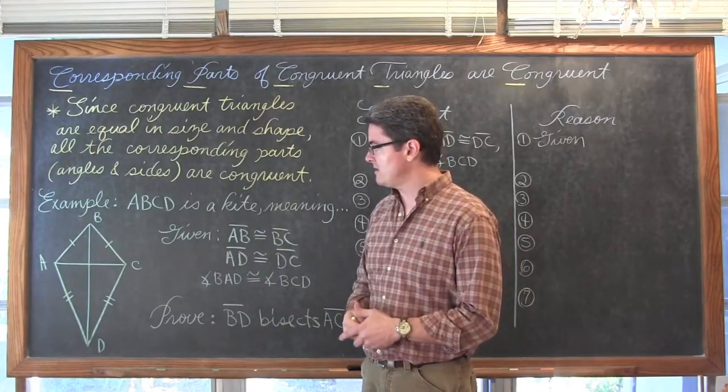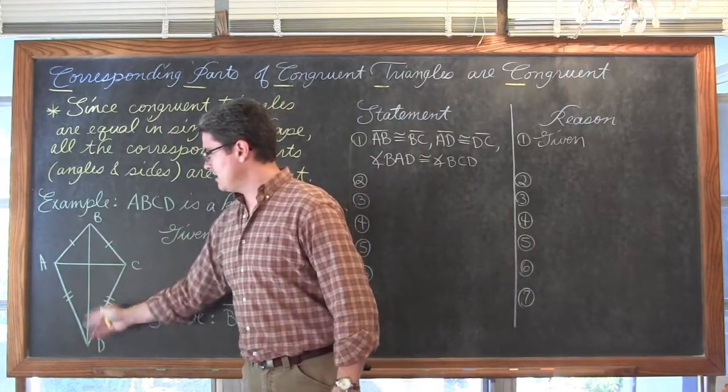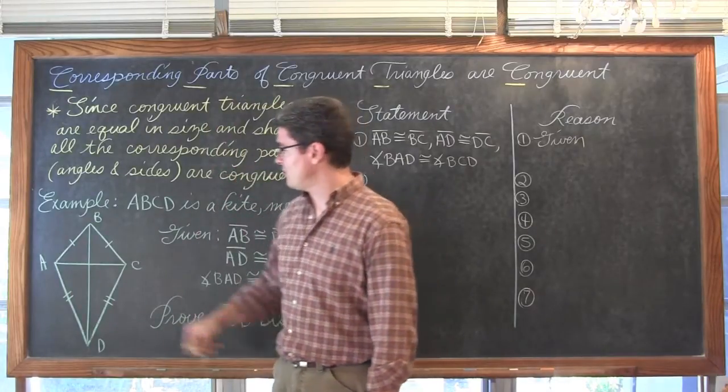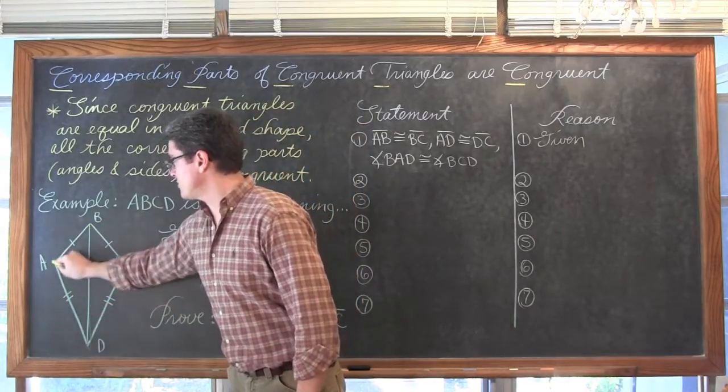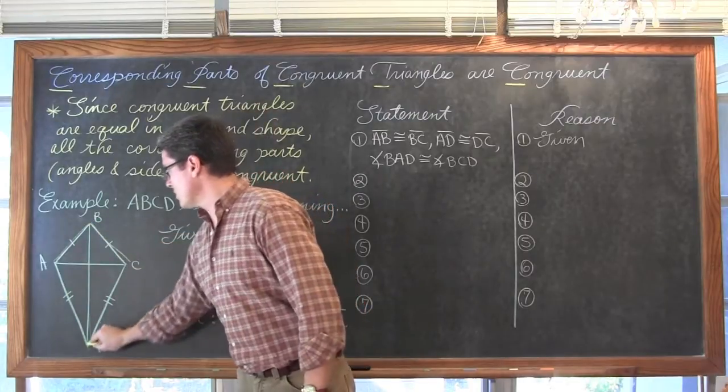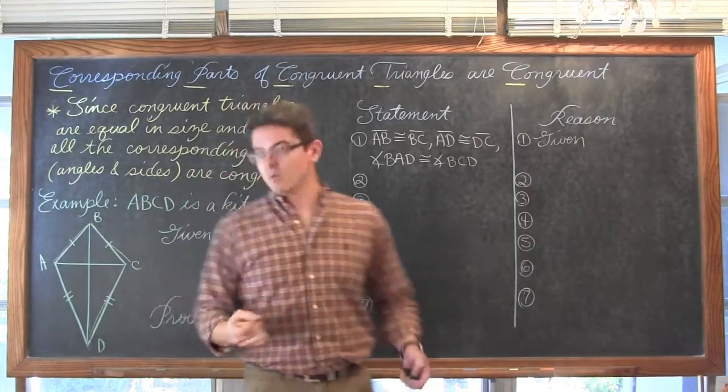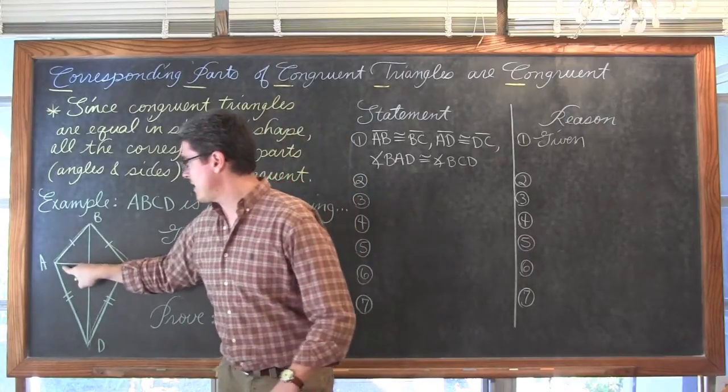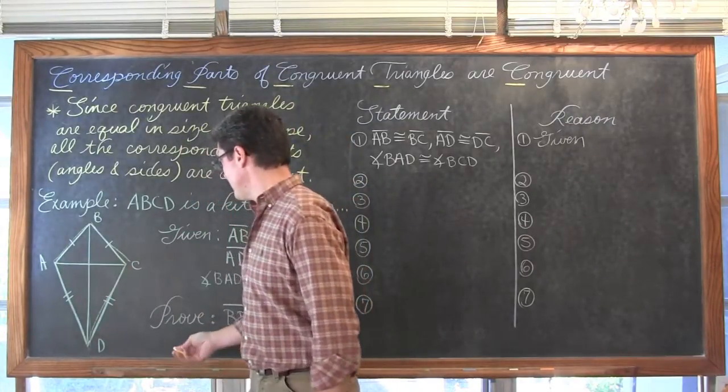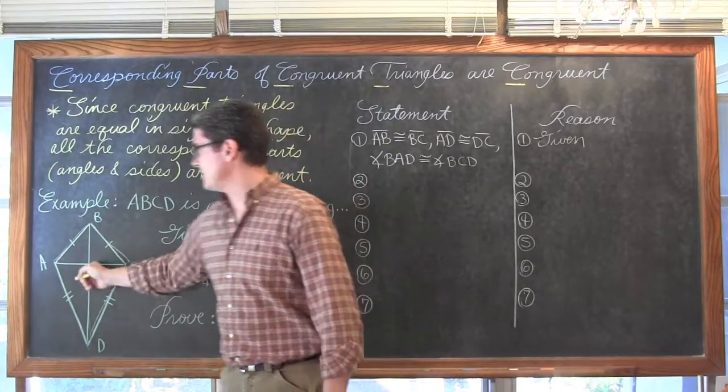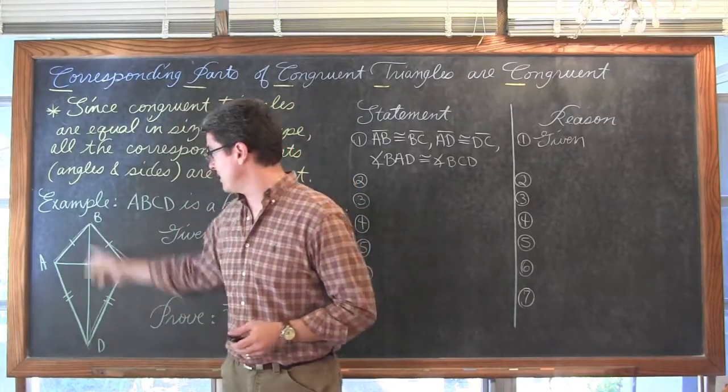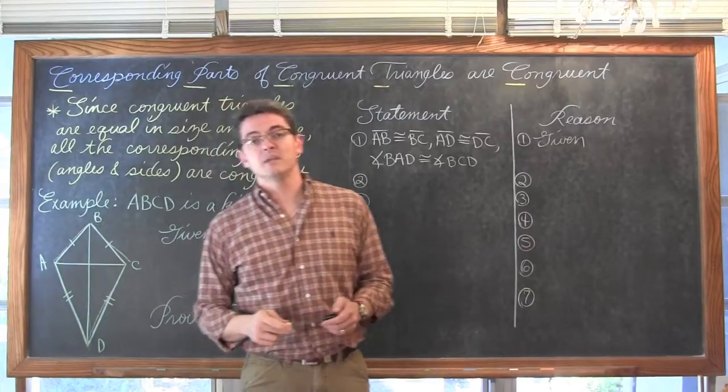So we are going to start off by saying that BD is congruent to itself. And I want to focus on showing that these two triangles are congruent and use their corresponding parts which are congruent to finally work our way inside and talk about the segments. I am missing a label here. I will fill in that label as I pause to put it in the line here about the reflexive property BD being congruent to BD.